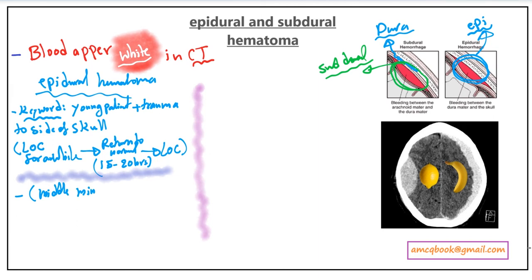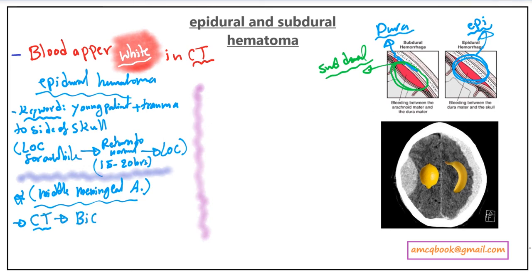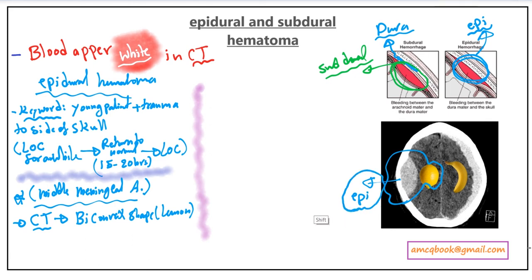On CT scan, epidural hematoma appears as a biconvex lens shape — like a lemon shape. If you look at the picture on the right side, it appears like a lemon shape, confirming epidural hematoma. The treatment requires emergency craniotomy.